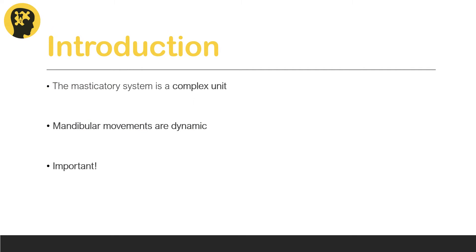The masticatory system consists of the TMJ, muscles, ligaments, and teeth, all of which exist in a harmonious relationship with each other and are highly controlled and regulated by the neurologic system. An upset to any one of these components will upset the entire masticatory system.